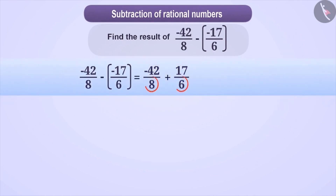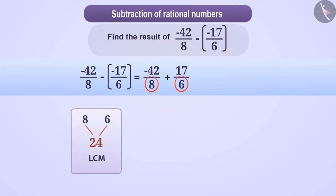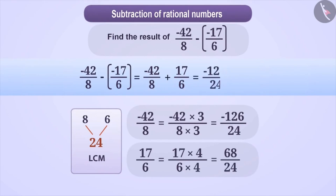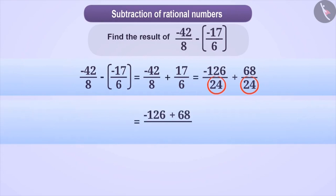The denominators of these two rational numbers are not equal. To make them equal, we use LCM. The LCM of 8 and 6 is 24. We multiply the numerator and denominator of minus 42/8 by 3, and the numerator and denominator of 17/6 by 4. This makes the question minus 126/24 plus 68/24. Adding the numerators gives minus 126 plus 68 which equals minus 58, so the answer is minus 58/24, which simplifies to minus 29/12.